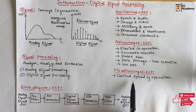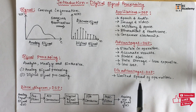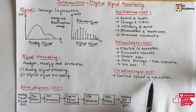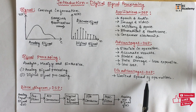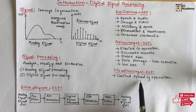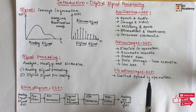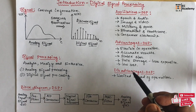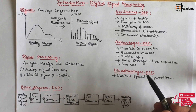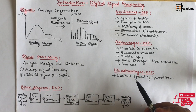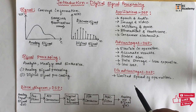One disadvantage of DSP is that it has a limited speed of operation, which is limited by DSP hardware, especially at high frequencies. This is one of the major disadvantages of digital signal processing. This concludes the introduction to digital signal processing. Hope you have understood the topic. Thank you.